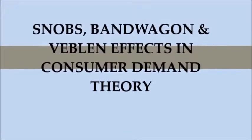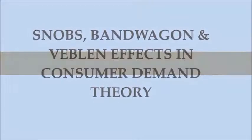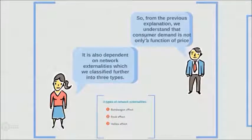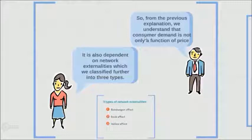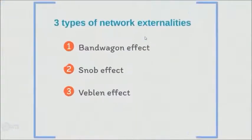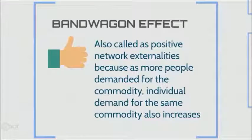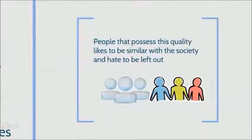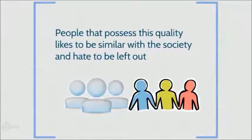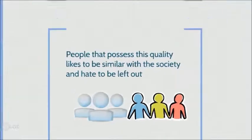Now let's talk about snob, bandwagon, and Veblen effect in consumer demand theory. Consumer demand is not only a function of price but is also dependent on network externalities, classified further into three types. The bandwagon effect is also called positive network externalities because as more people demand the commodity, individual demand for the same commodity also increases. People who possess this quality like to be similar to society and hate to be left out.